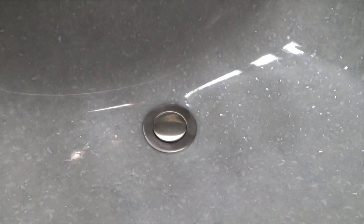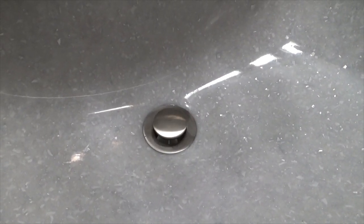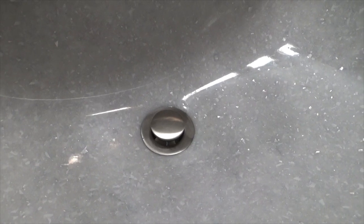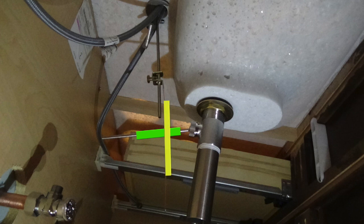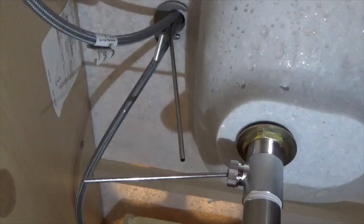Check to make sure the stopper functions properly when the pivot rod is moved up and down. With the pivot rod positioned downward, I identify the hole on the strap that will intercept the rod. I make note of that hole and remove the strap from the lift rod.